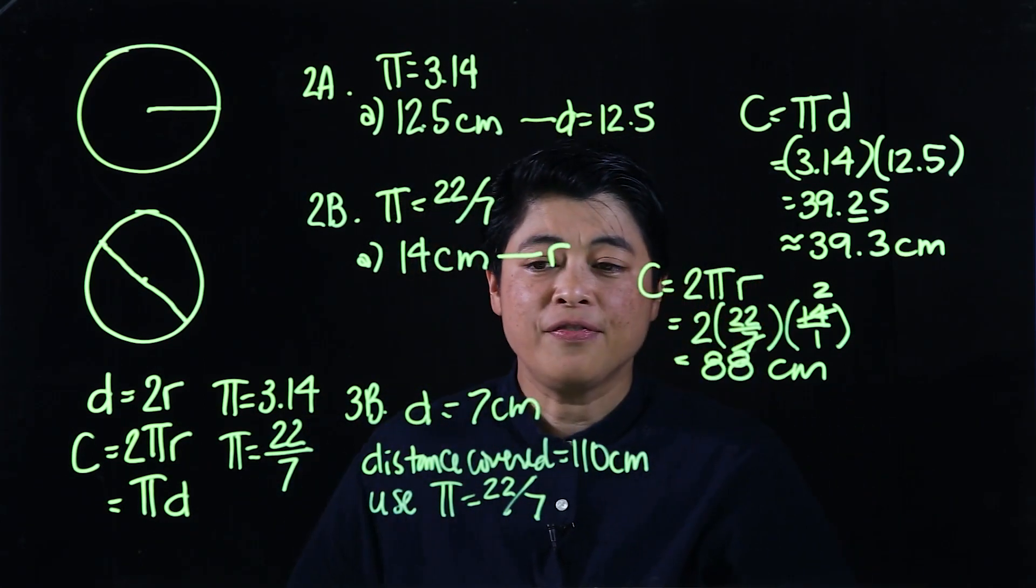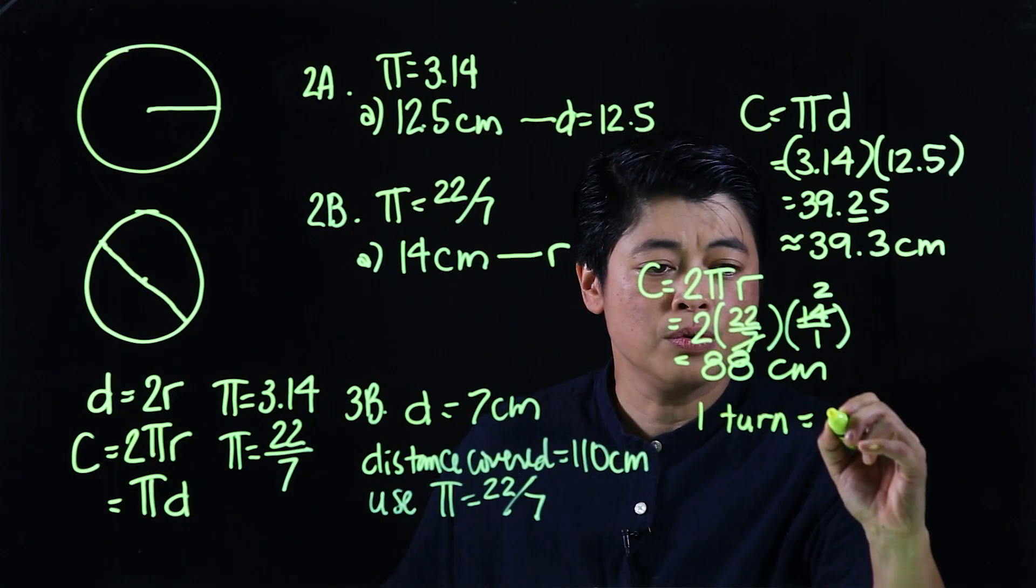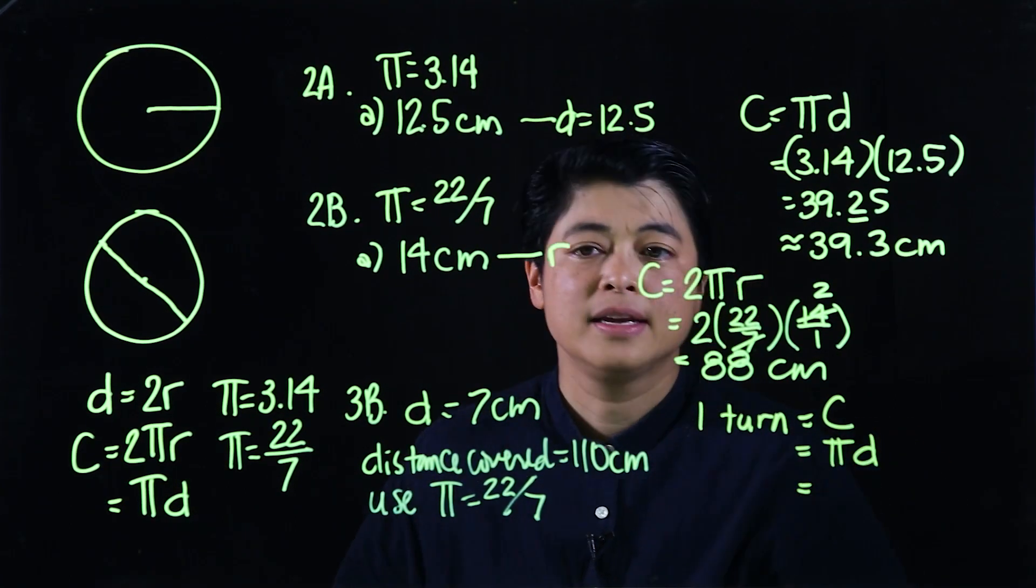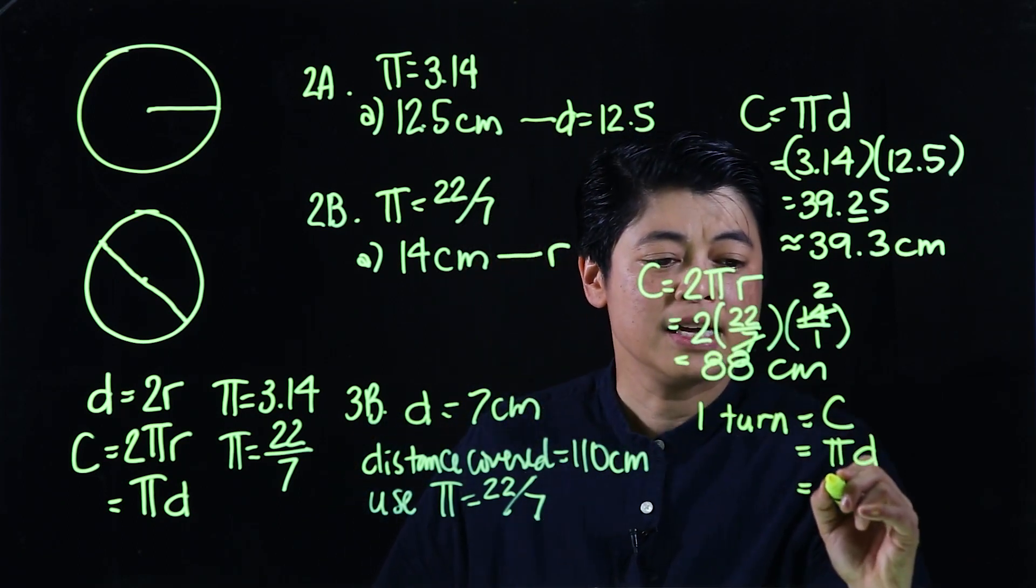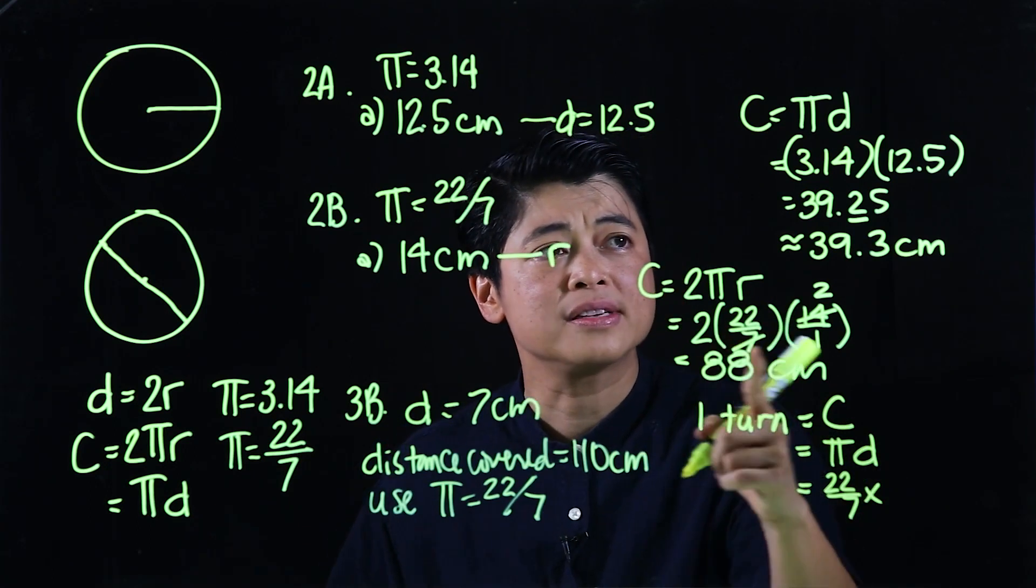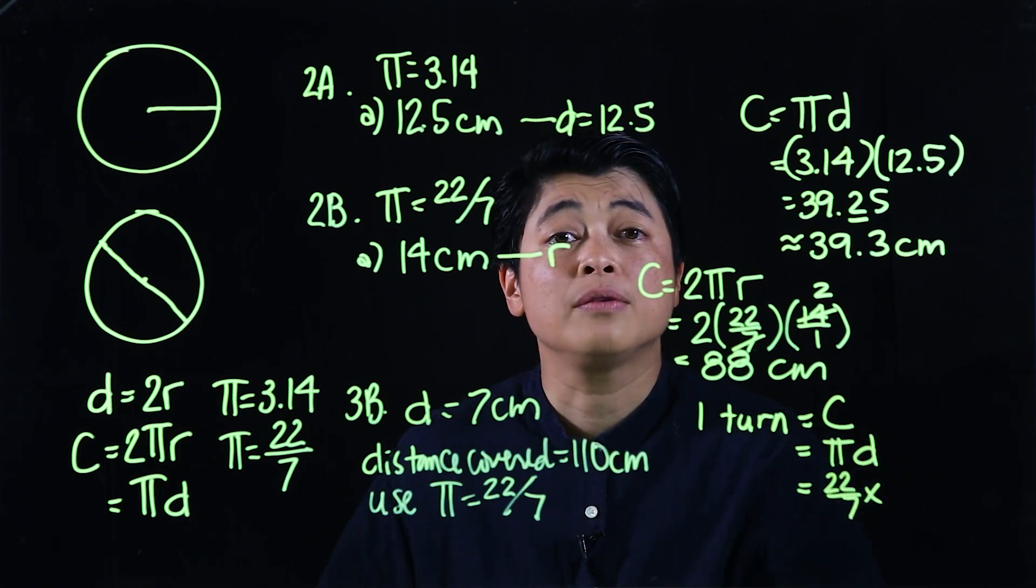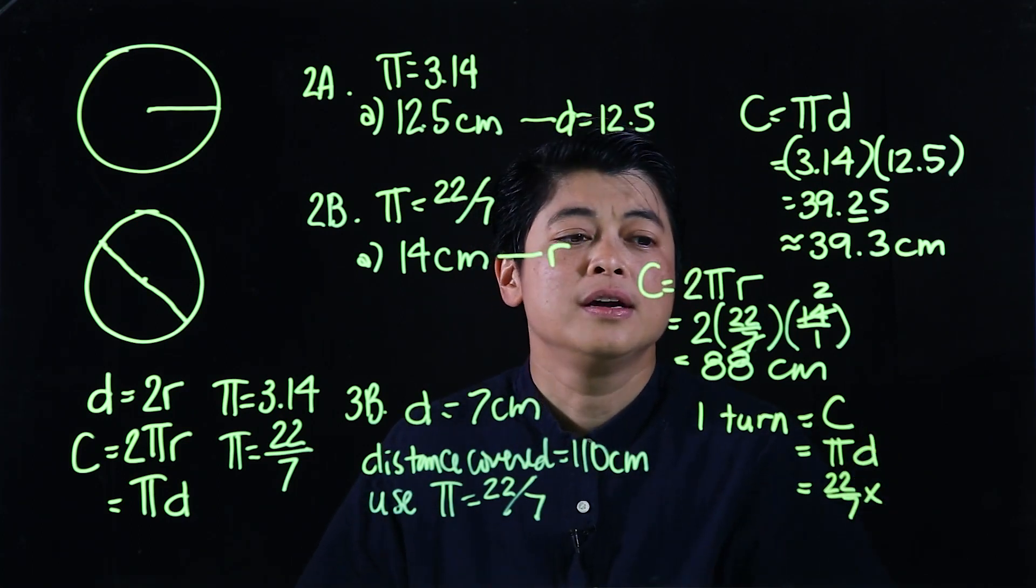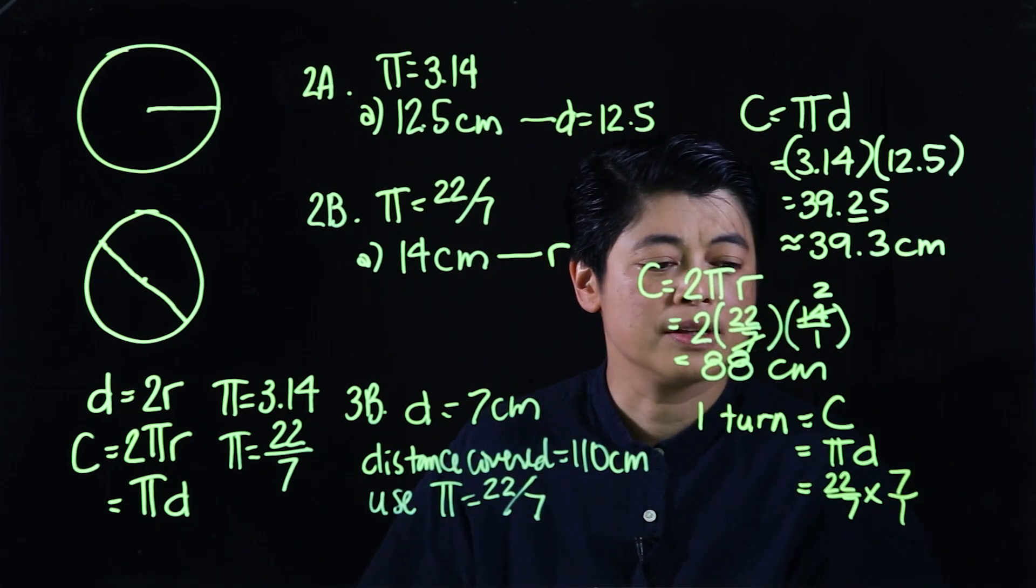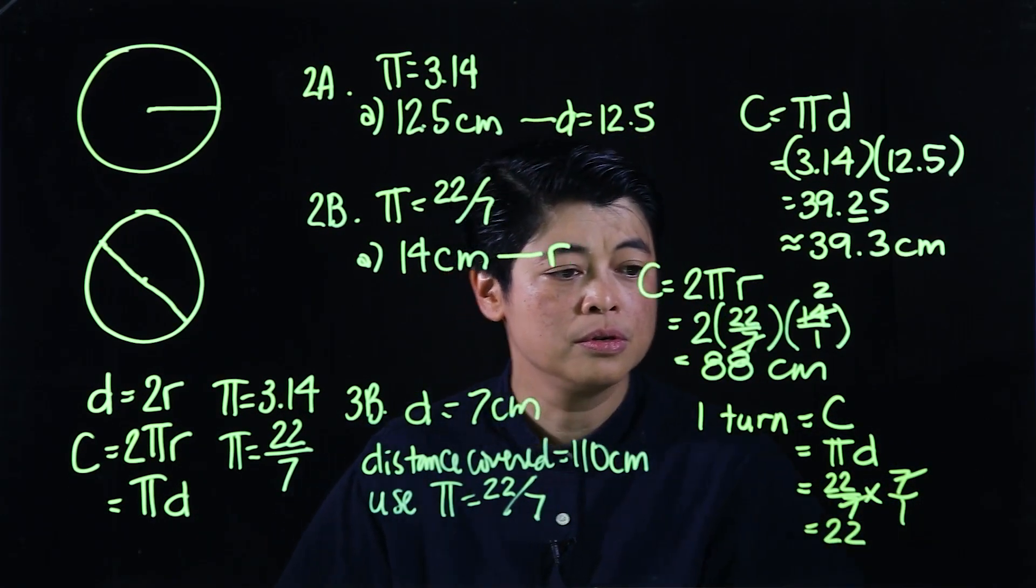We know that one turn is equal to a circumference, and circumference is π×d. So this will be 22/7×7. That means that will cancel. So one turn is 22 centimeters.